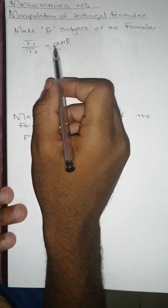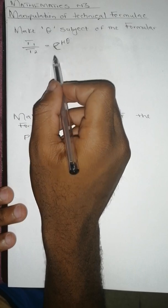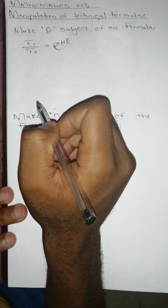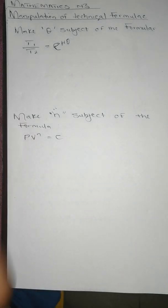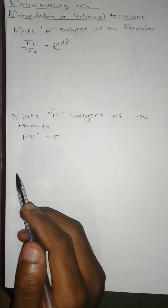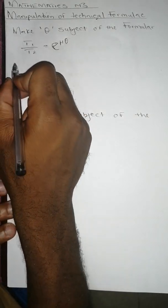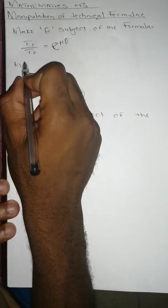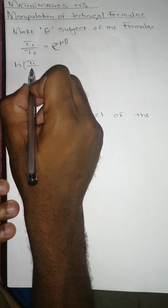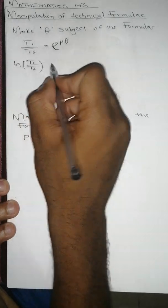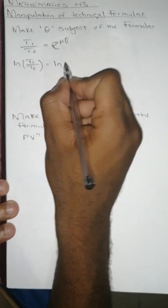We know that to bring this down, since this is e to the power something, we have to apply ln which is the natural log. ln(e) equals to one, so what we are going to do is apply ln on both sides. So it's going to be ln(T₁/T₂) equals to ln(e) to the power μθ.